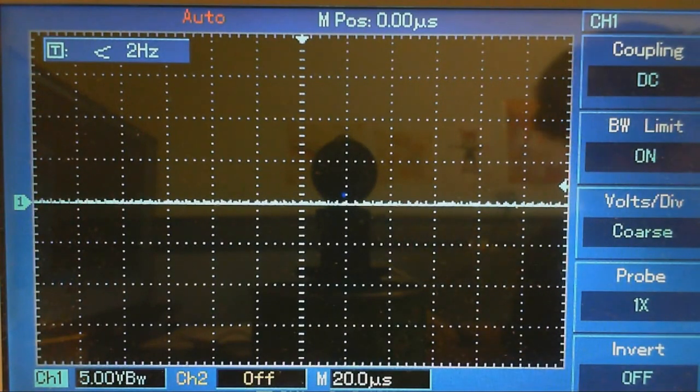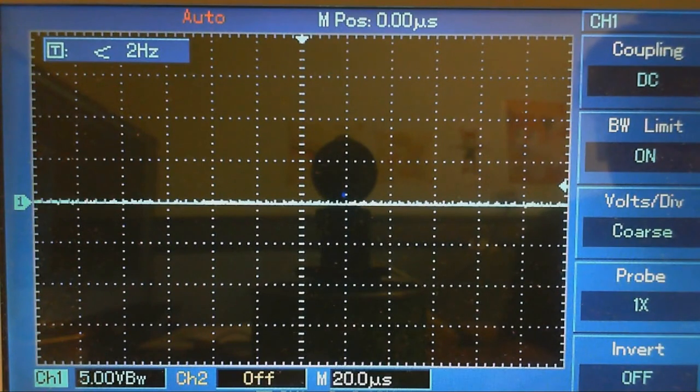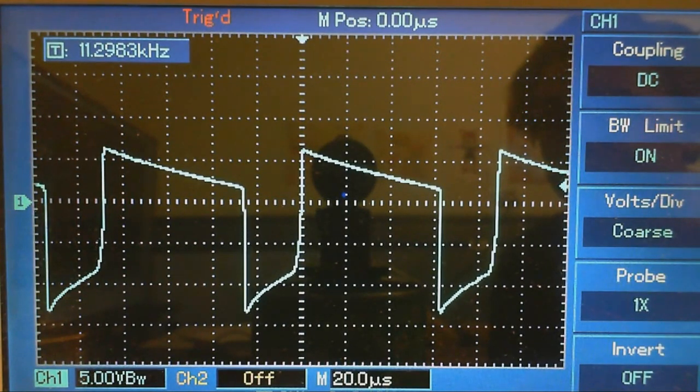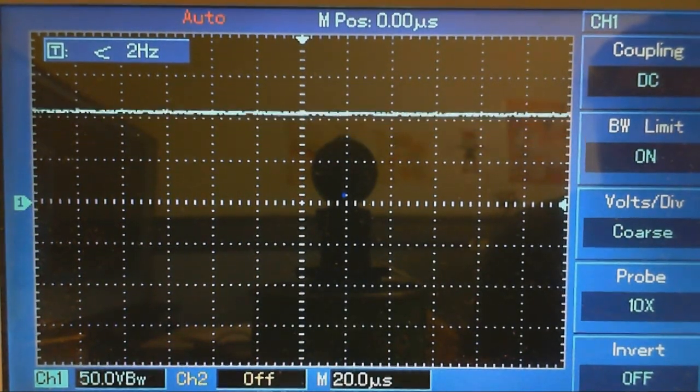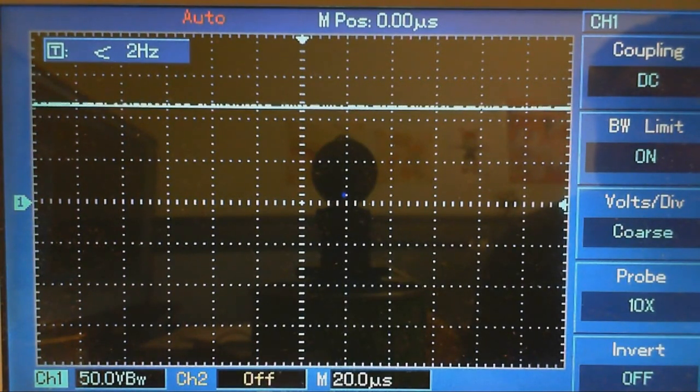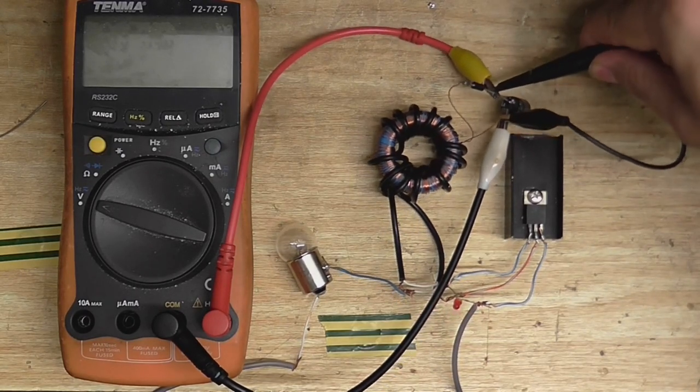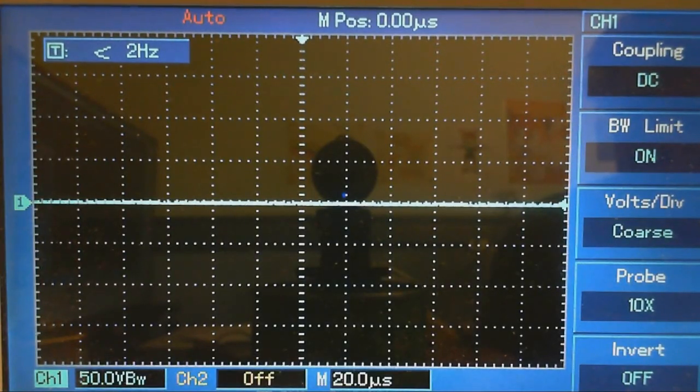And for all you waveform aficionados, I'm not going to disappoint. So let's have a look at some waveforms while a moth has sex with my light. So this is the waveform at the primary. This is the waveform at the gate, which seems to have a lot of negative peaks despite the LED. And this is the waveform at our output. Nice and smooth.